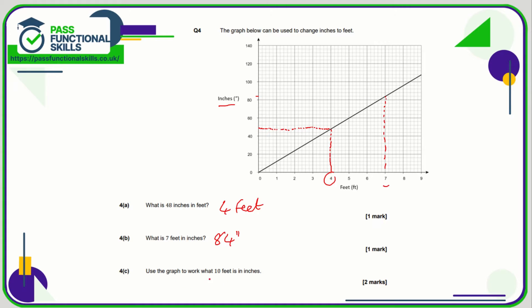We're going to use the graph to work out what 10 feet is in inches. Now the issue here is that 10 feet is off the scale. But what we can do is, we know that four feet is 48 inches, we know that seven feet is 84 inches. But actually five feet is nice and easy, five is half of 10 as well. So five feet corresponds to 60 inches. So if five equals 60, then 10 is going to equal 120 inches.